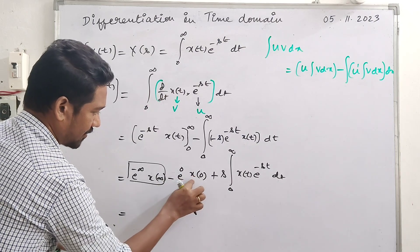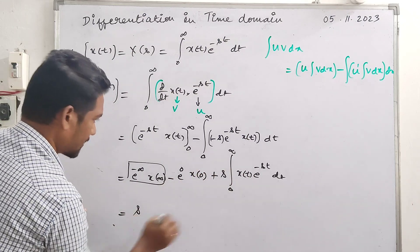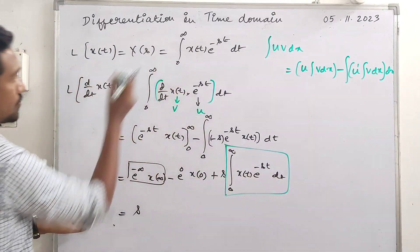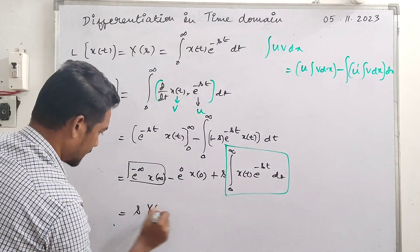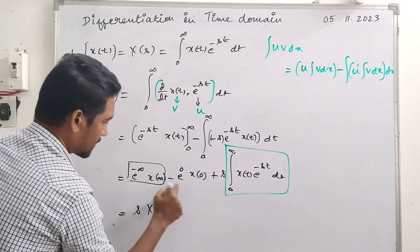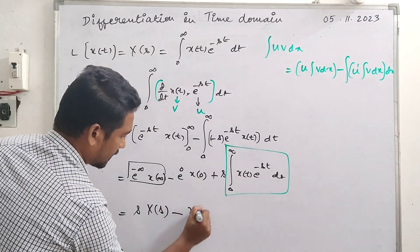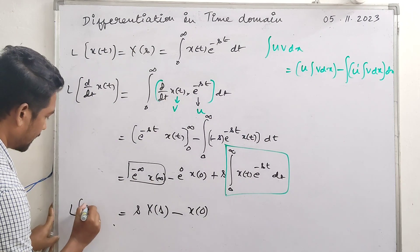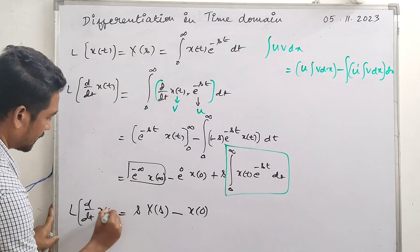E raised to negative infinity equals 0, so that whole term becomes 0. And e raised to 0 equals 1. So we have: negative 1 times x(0), minus negative — which gives positive — s times x(s), where the integral of x(t) e raised to minus st dt from 0 to infinity is x(s) by definition. Therefore the result is s times x(s) minus x(0).